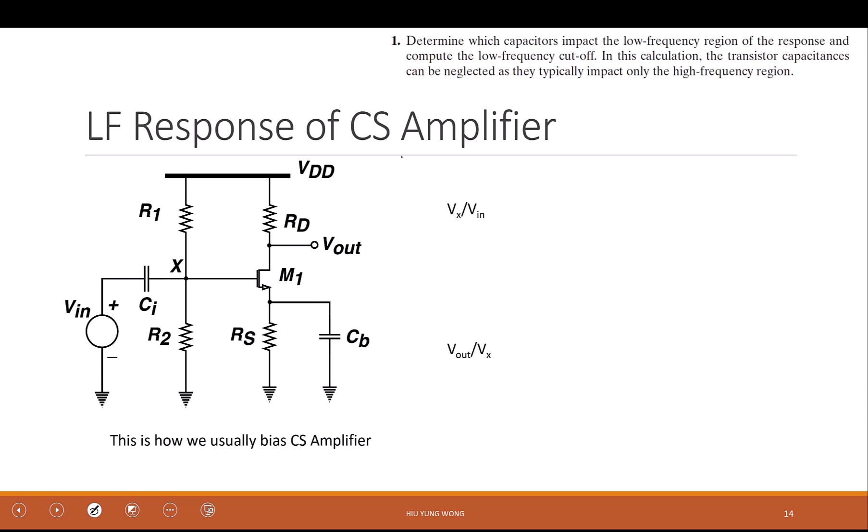Gain definitely equals Vout divided by Vin. But earlier we learned a skill, how to deal with this complex situation. Because I say, if I know what is, I already know what's the gain from X to Vout. Because I recognize this is a common source with degeneration. So I decided to break it into two parts: Vout divided by VX and VX divided by Vin. Vout divided by VX is easy because you just told me it's common source with degeneration. So do you remember the equation?